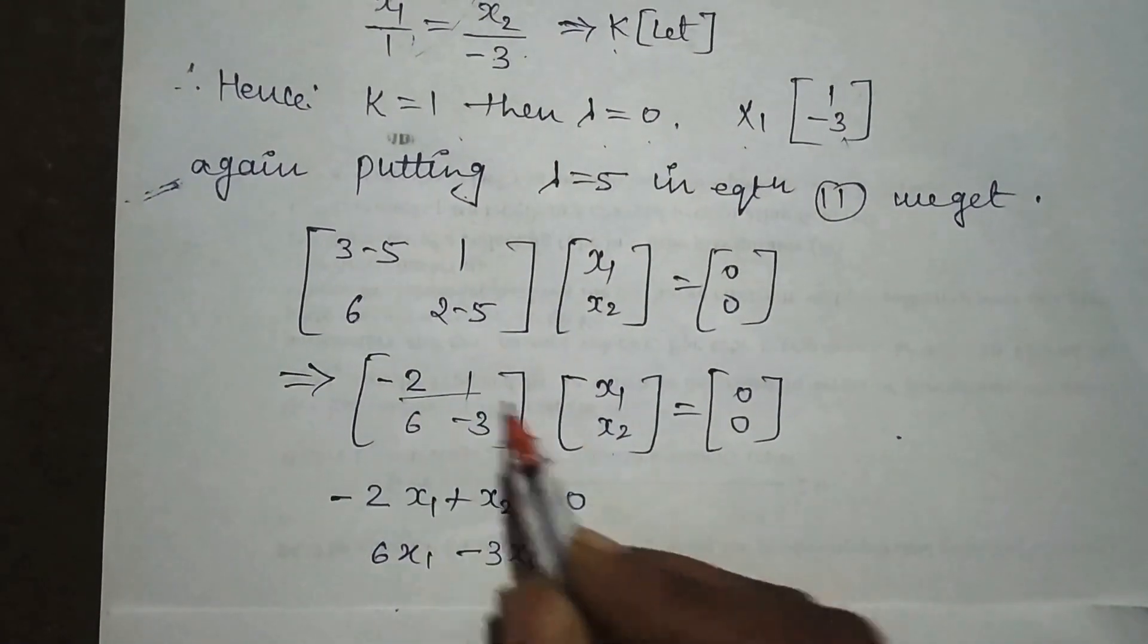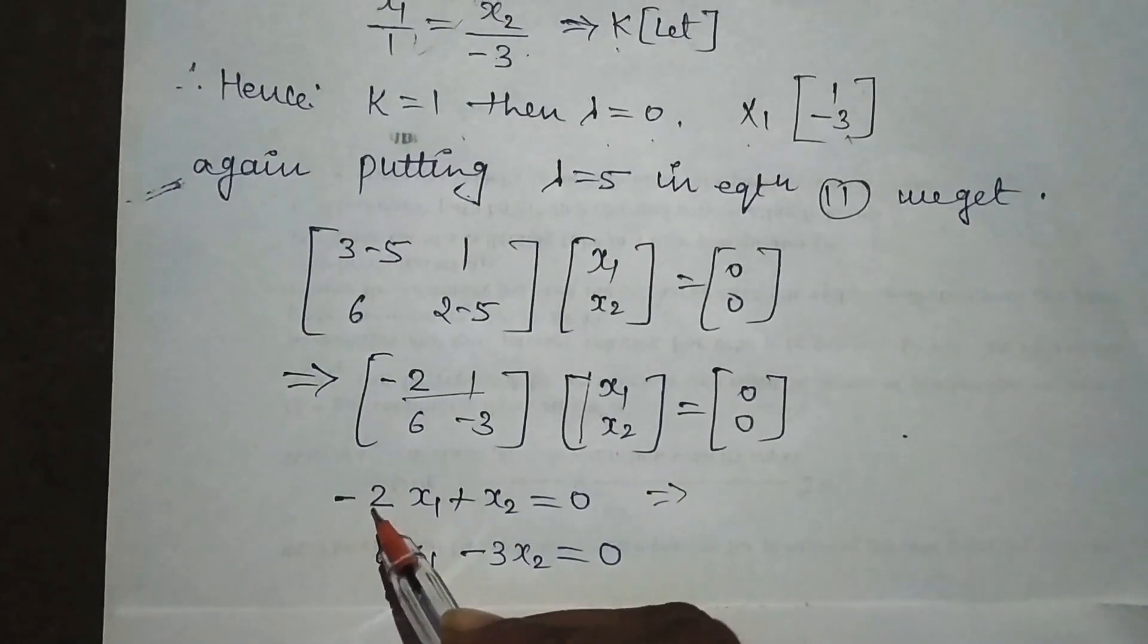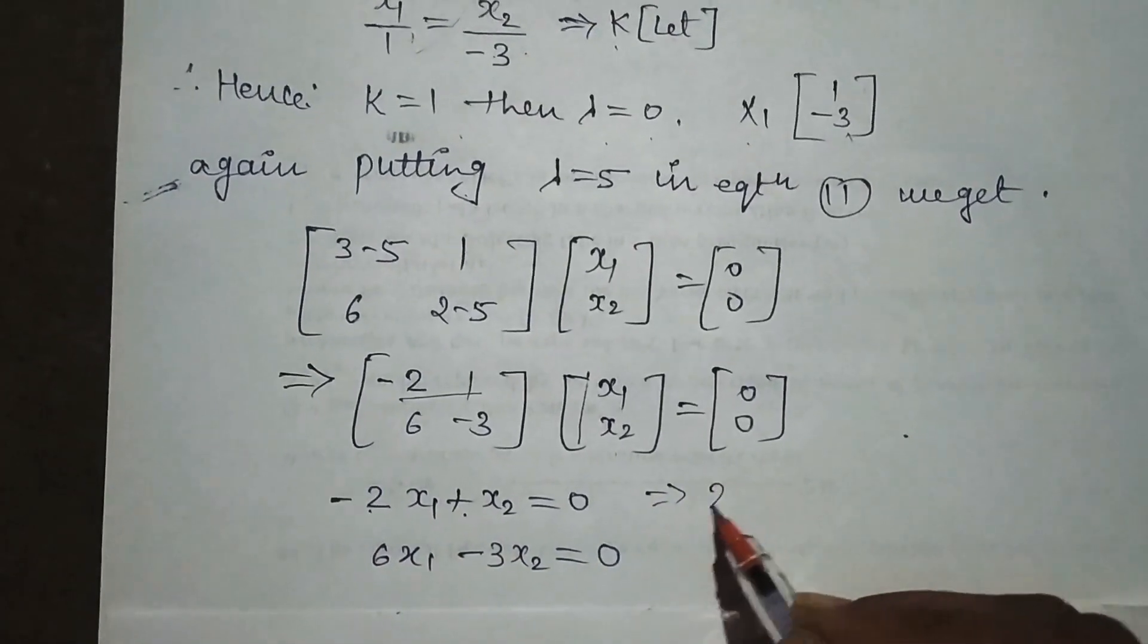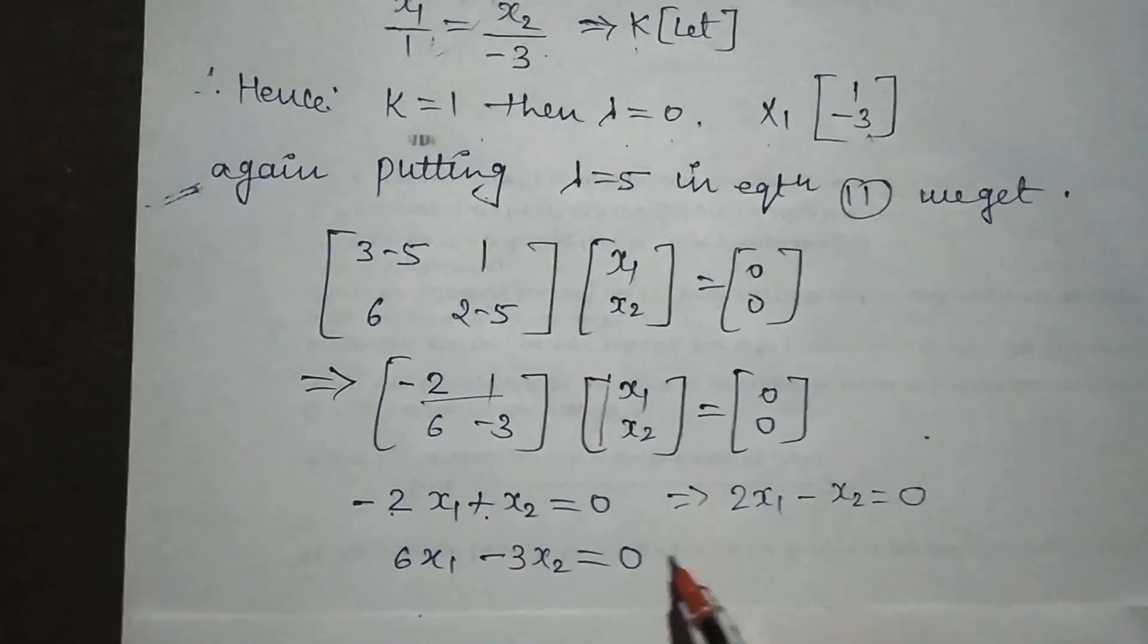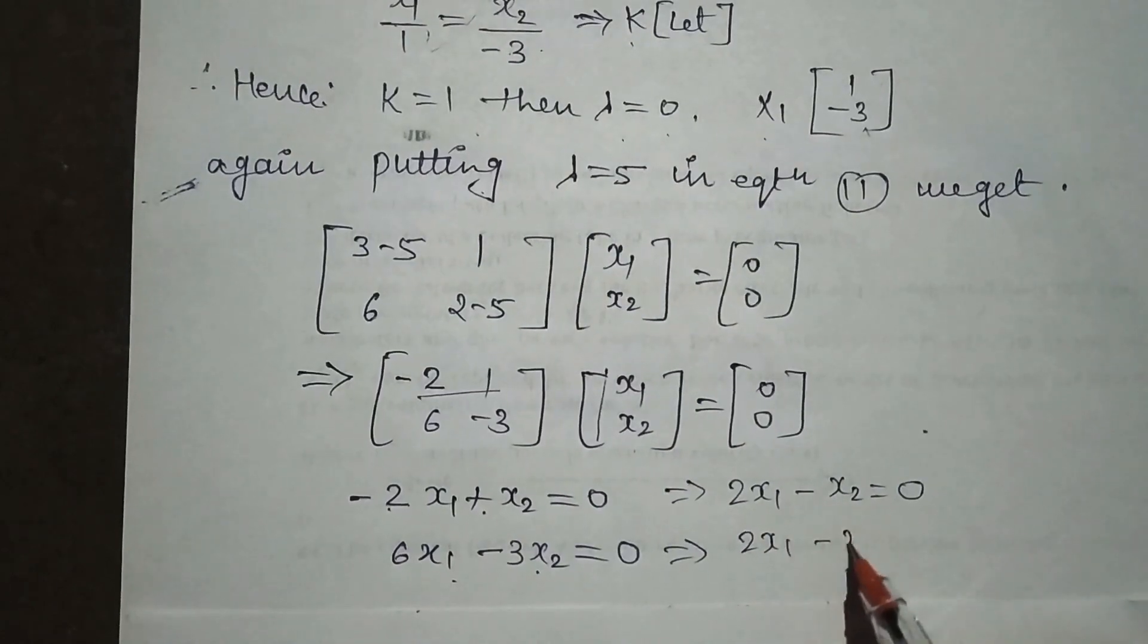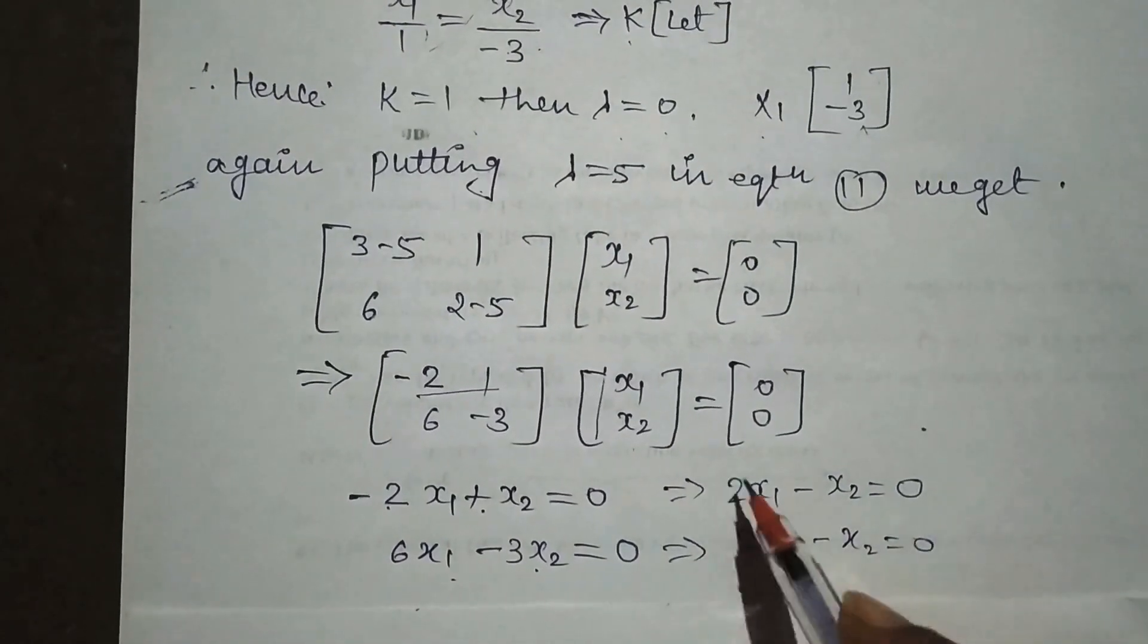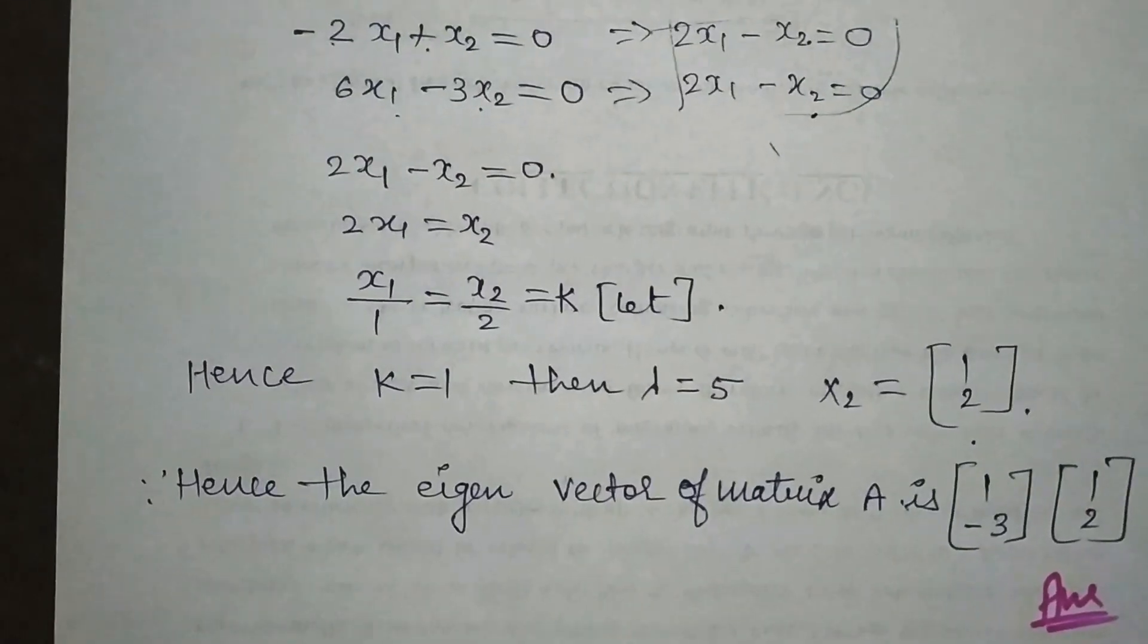Both equations are the same again. If we multiply by minus, or if we divide by three, this becomes 3x₁ - x₂ = 0. These two equations are similar, so we solve once.